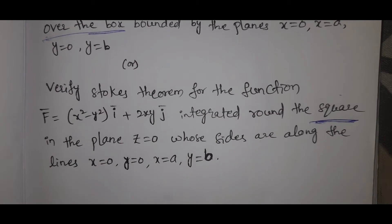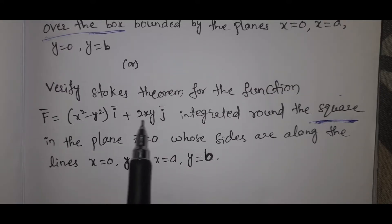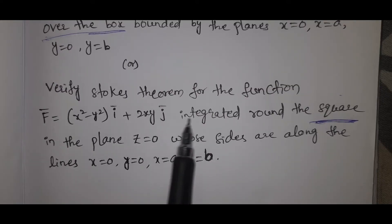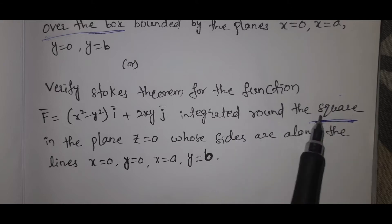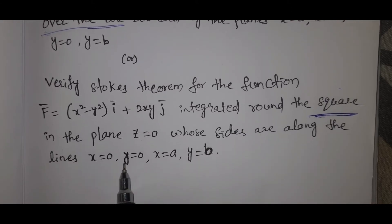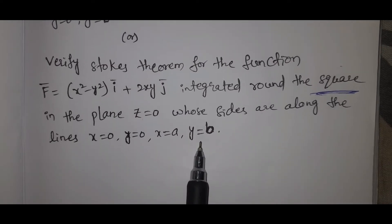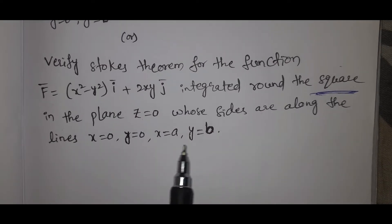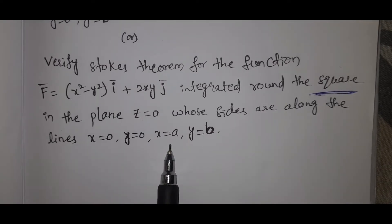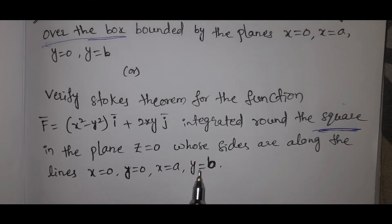Verify Stokes theorem for the function F̄ = (x² - y²)ī + 2xyj̄, integrated round the square in the plane z=0 whose sides along the lines x=0, y=0, x=a, y=b. Look at the function F̄.